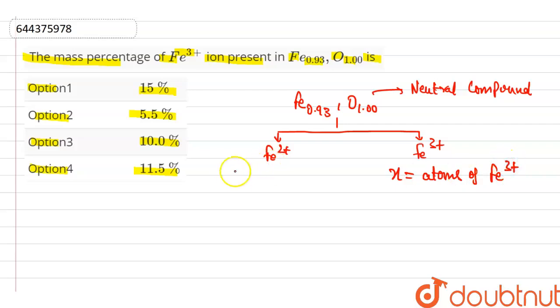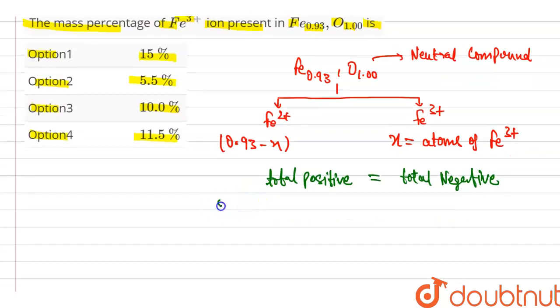And we know that total positive charge is equal to total negative charge. Then total positive charge is 2 into 0.93 minus x plus 3 into x is equal to total negative charge which is 2 because oxygen contains minus 2 charge.